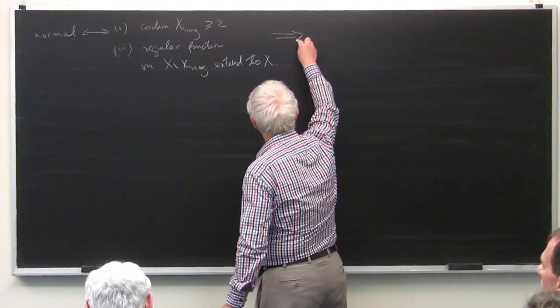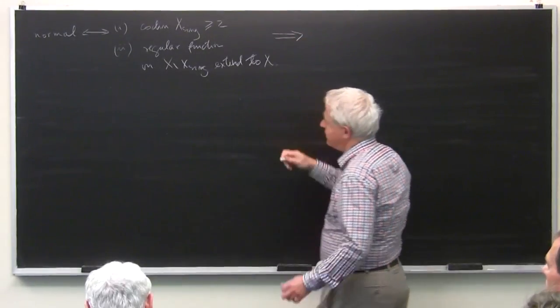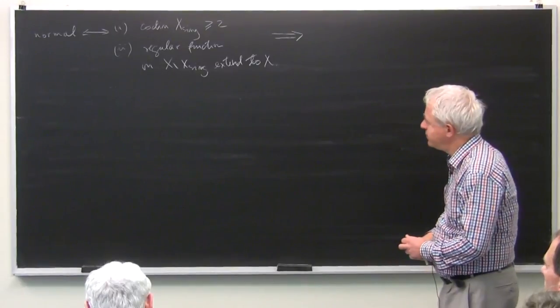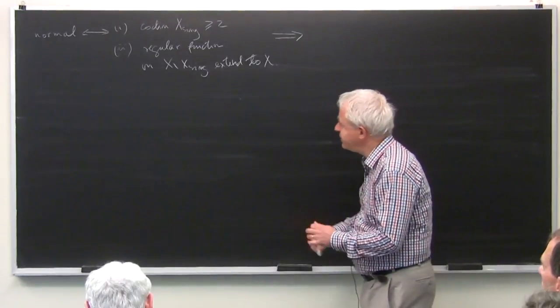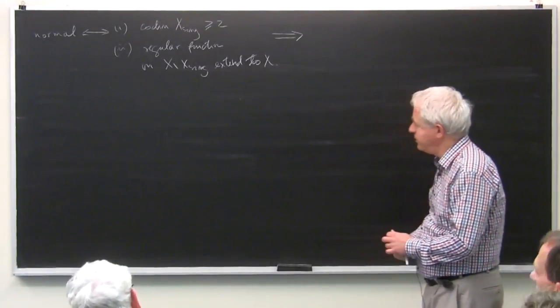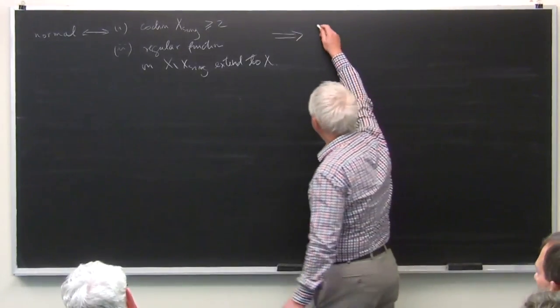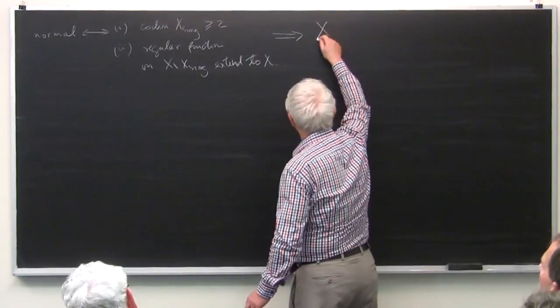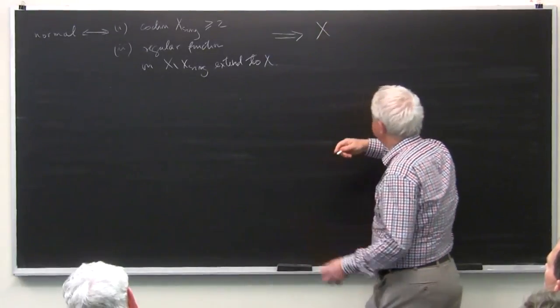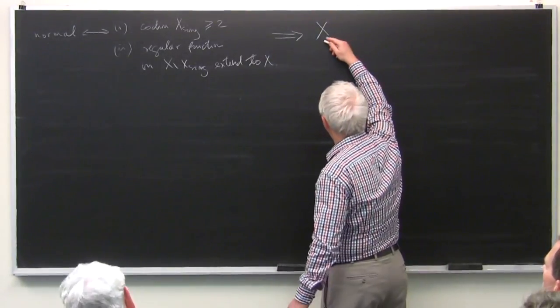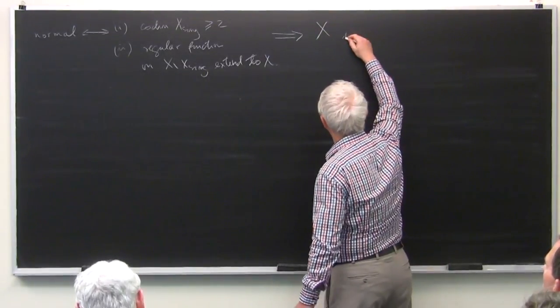The other condition is a kind of Hartogs extension property: holomorphic regular functions on x minus the singular locus extend to x. And what is interesting is that normality implies a more topological property, which is the fact that x is unibranch.